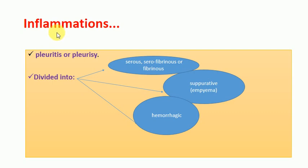Let's start with diseases that originate due to inflammation. Inflammation of the pleura is called pleuritis or pleurisy. Pleuritis can be grouped into three types: serous or serofibrinous pleuritis, suppurative pleuritis (also called empyema), and hemorrhagic pleuritis. We will look at each one in turn.